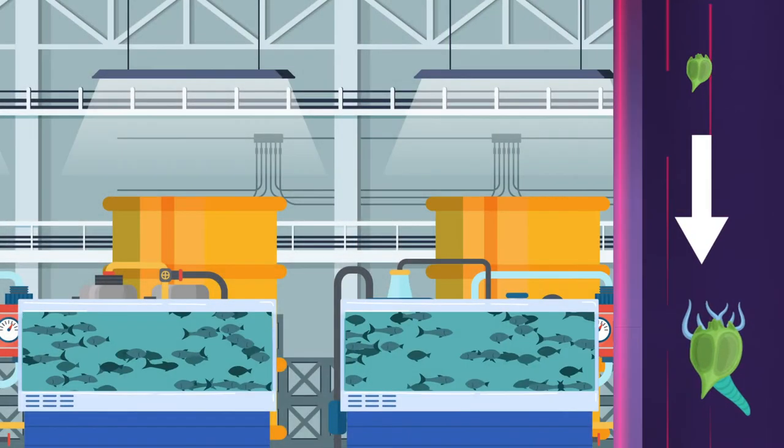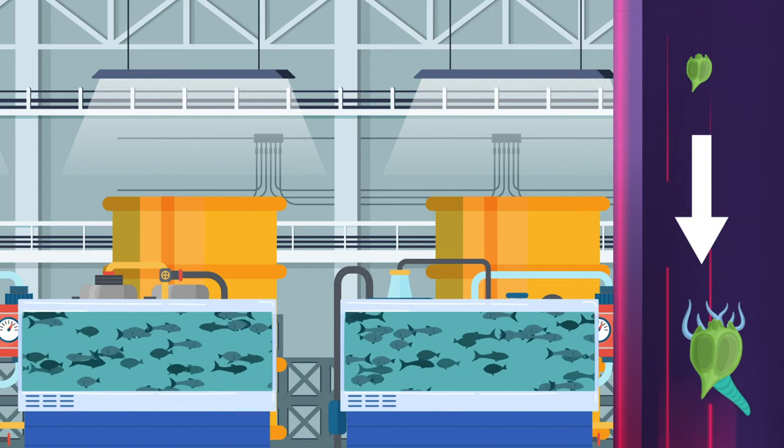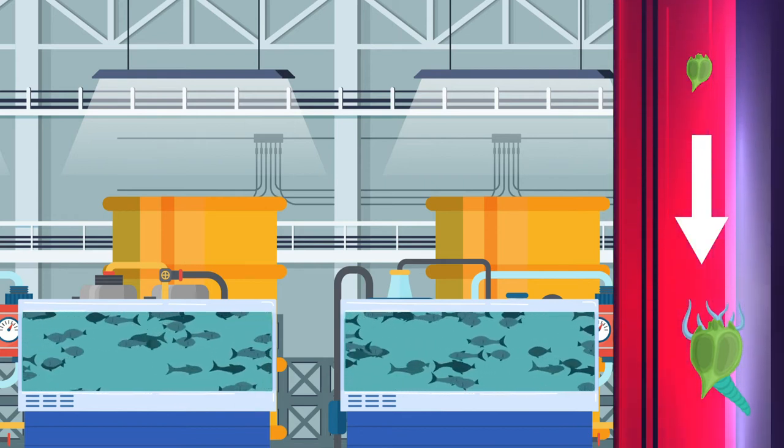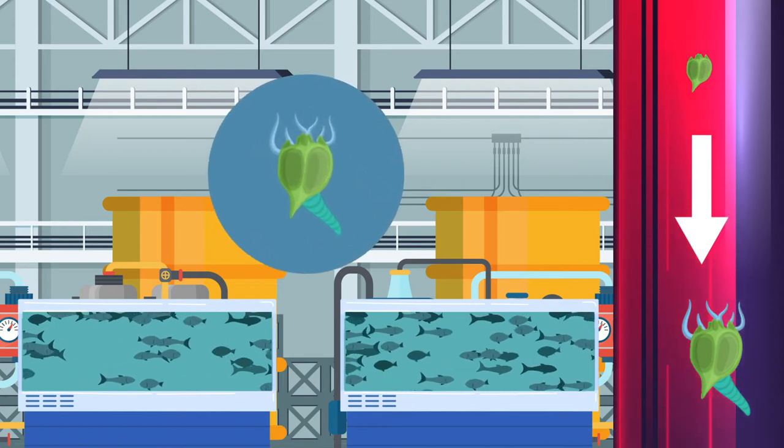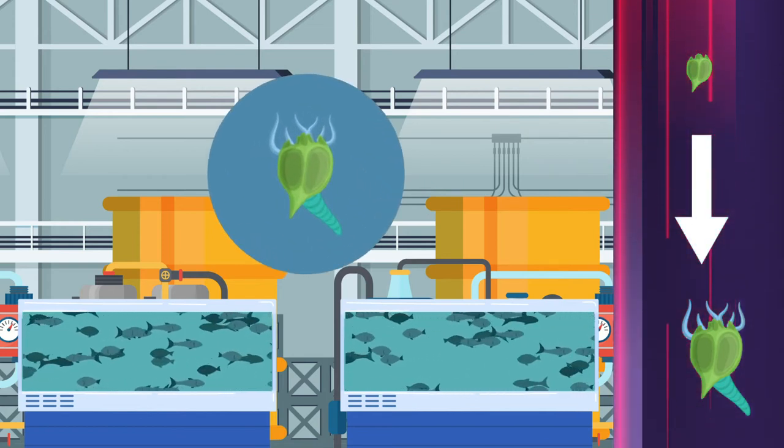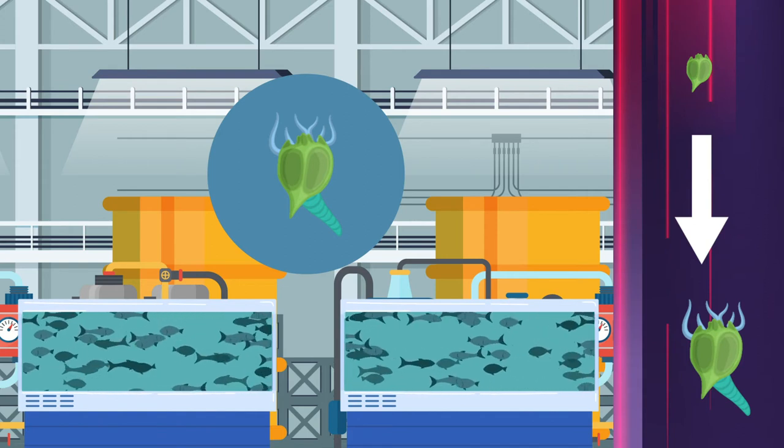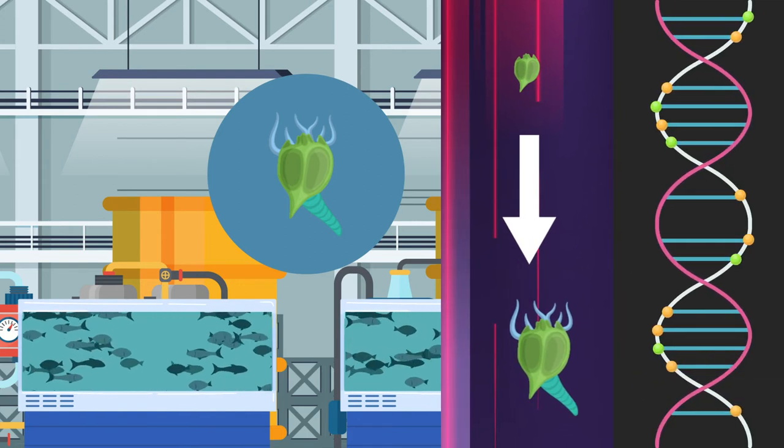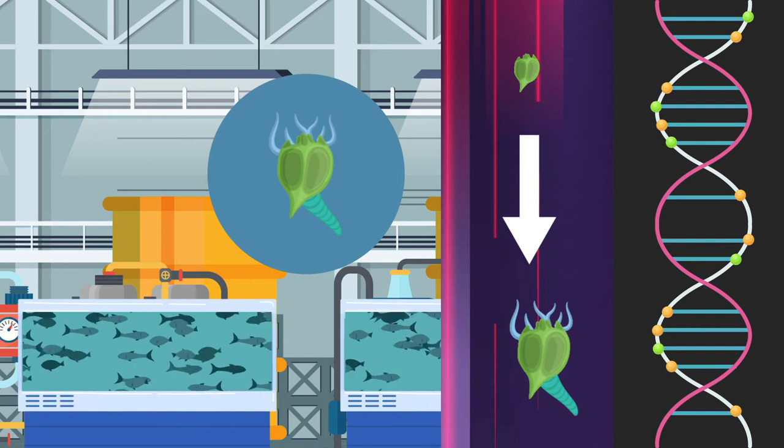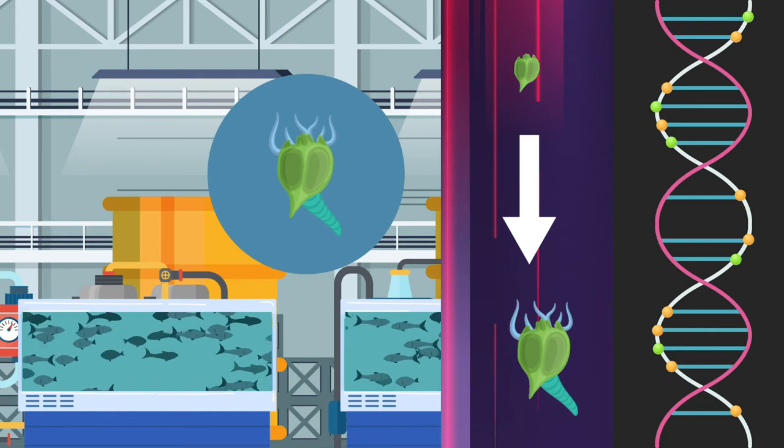Researchers from the Riken Nishina Center for Accelerator-Based Science generated high-powered beams of carbon and argon ions in the hopes of producing size-boosting mutations in rotifers, a phylum of plankton commonly fed to fish larvae. The tremendous amount of energy carried by these beams, a couple hundred thousand times the amount a human might receive during a routine CT scan, was enough to alter the DNA in rotifer cells.